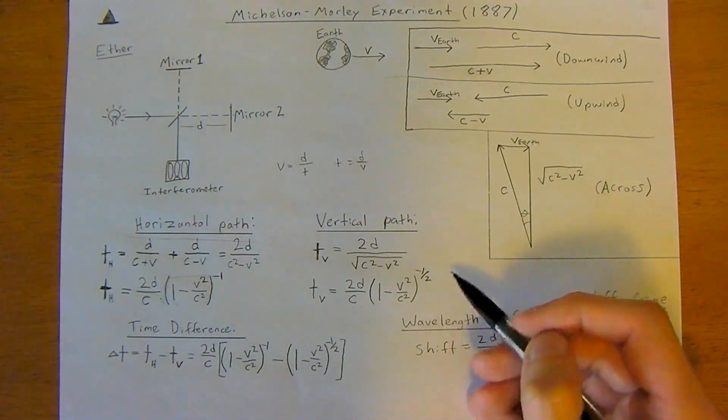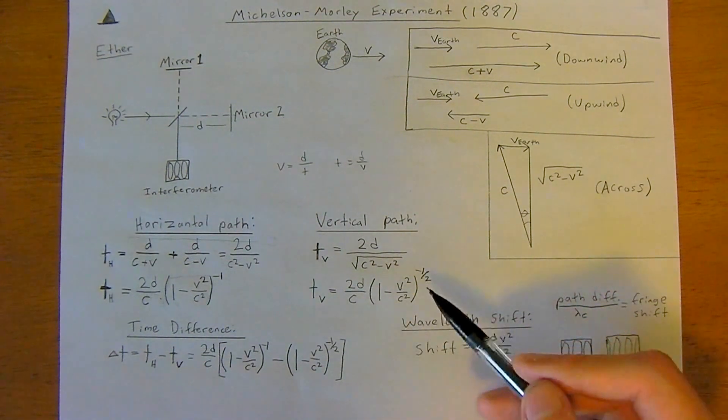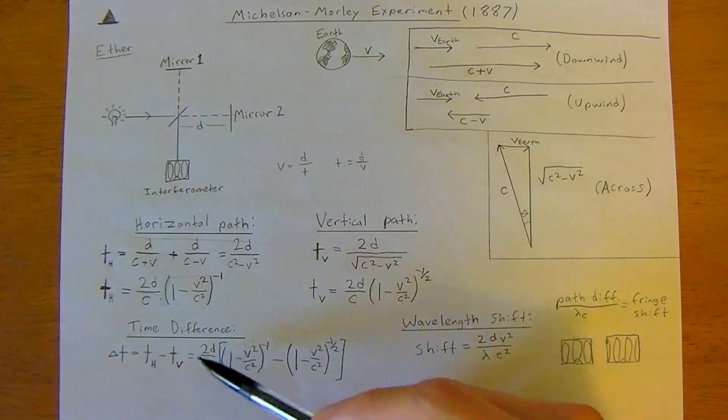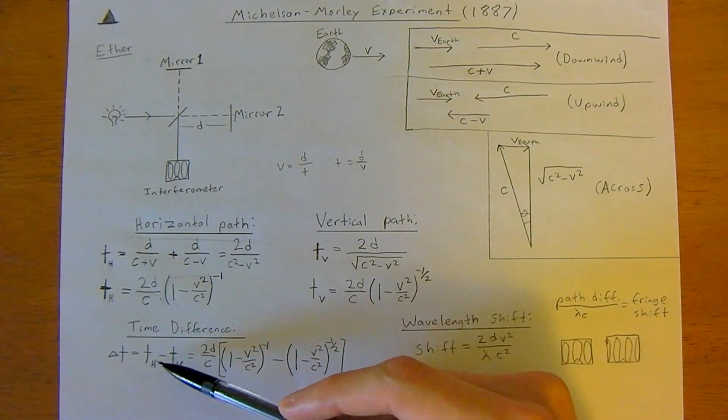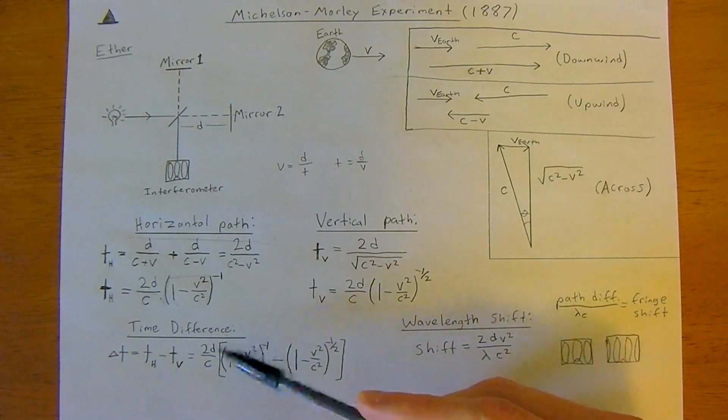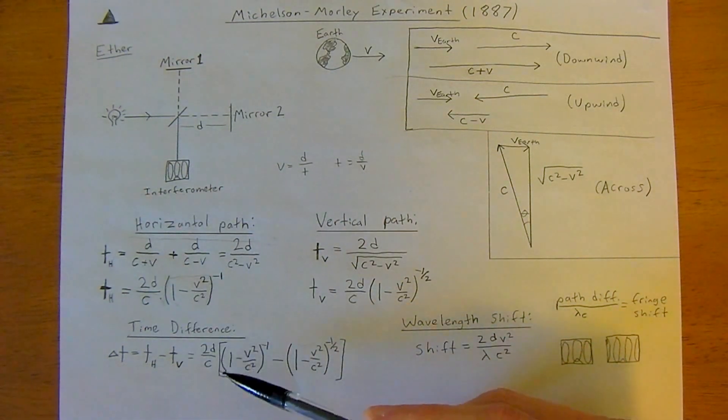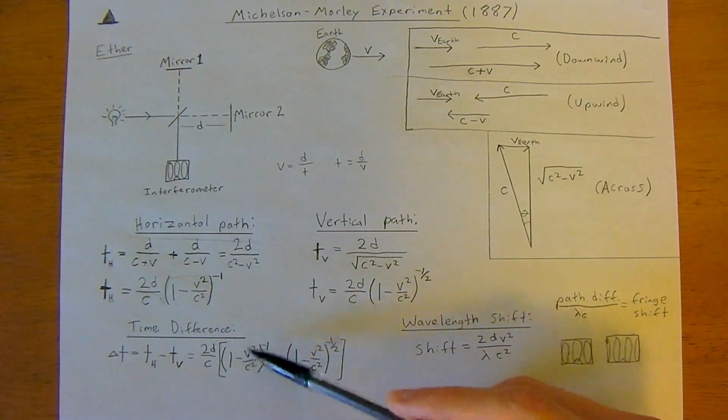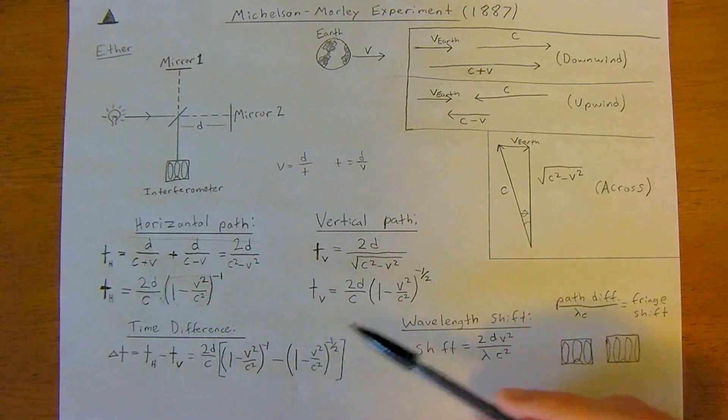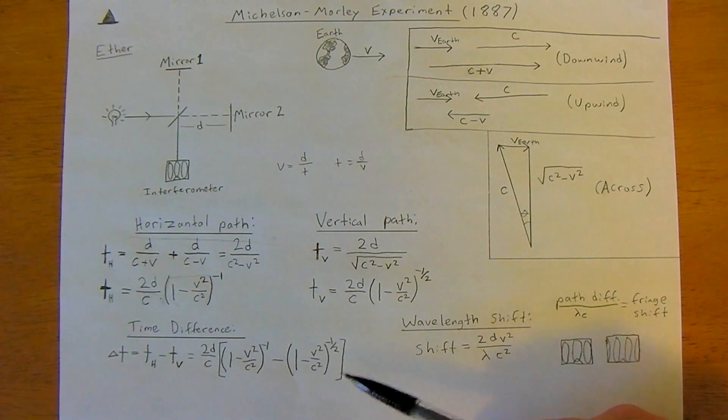Then they looked at the time difference. The change in time was the time horizontal minus the time vertical. This is why we factored out the 2d over c, because it makes this equation a lot easier: 2d over c, then we just have this minus this.